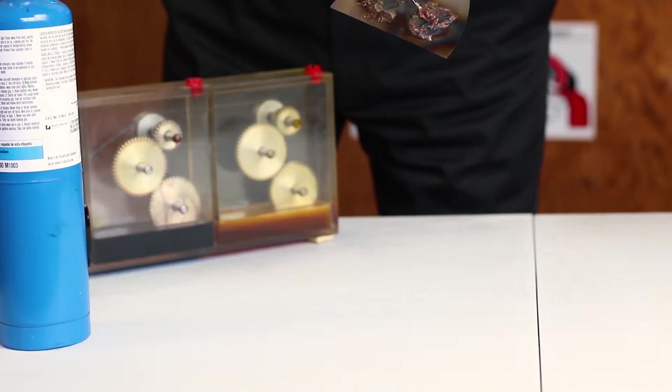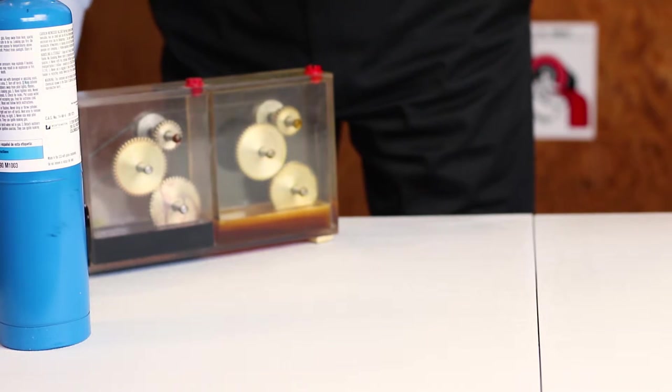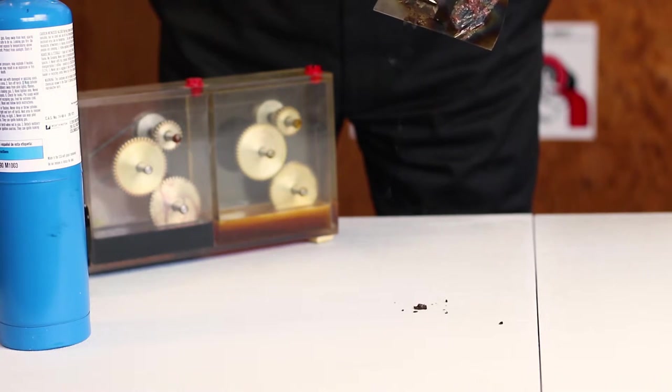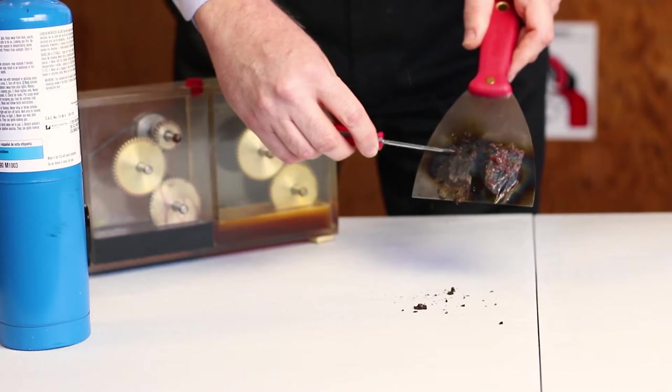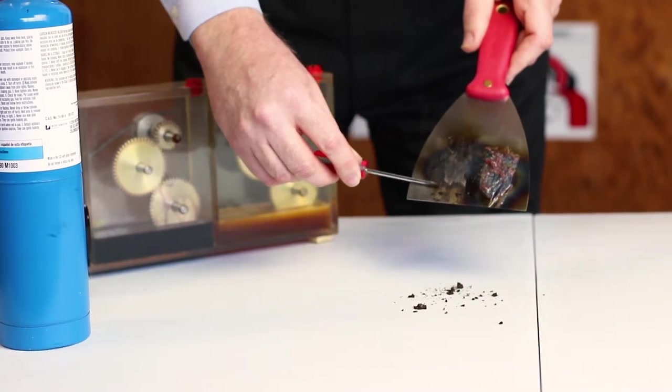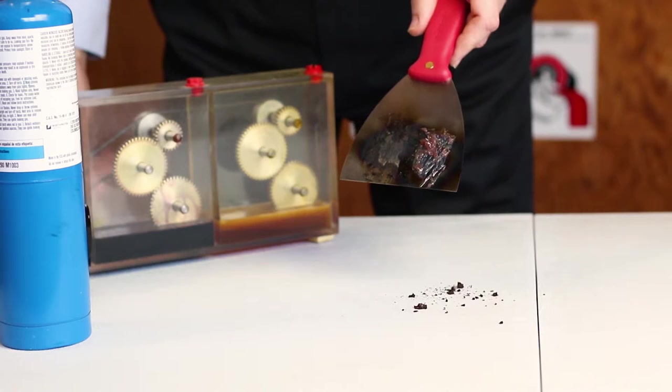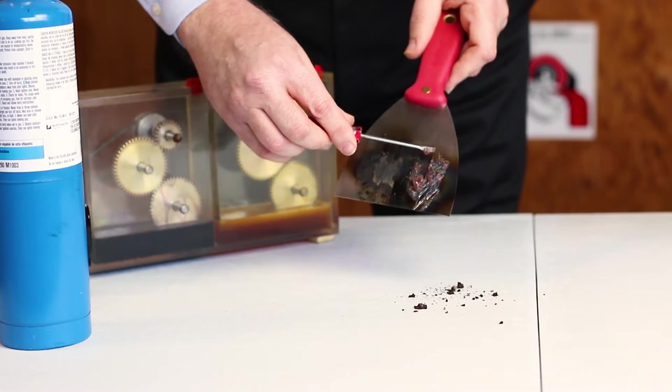So, you know, a bearing failure would have that. But with our grease, you're safe to go and re-grease if you have to. But there are, you know, properties to our grease that allows it to withstand heat. You can tell, ours is still there.